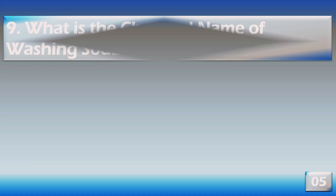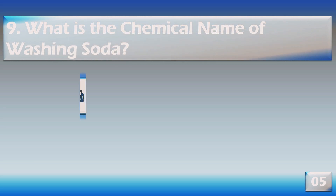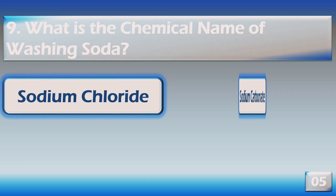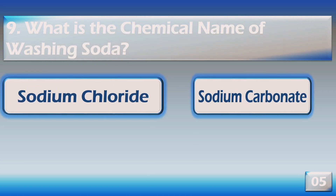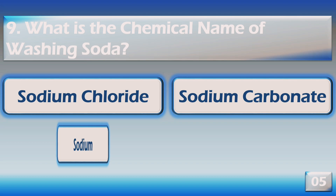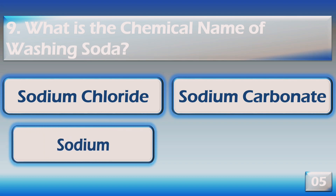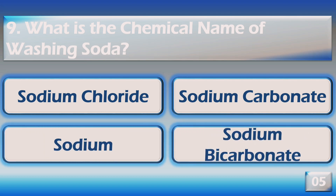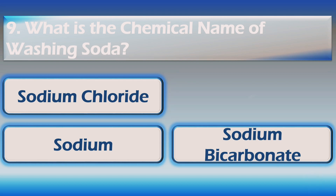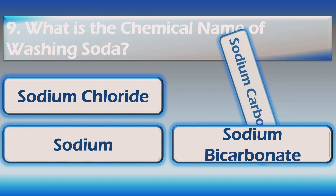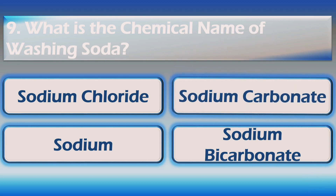Which of the following is known as marsh gas? Methane. What is the chemical name of washing soda? Sodium carbonate.